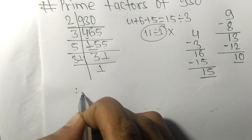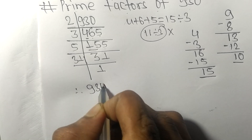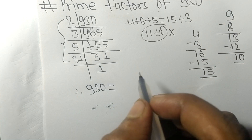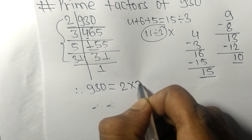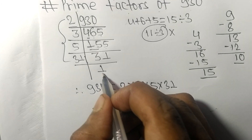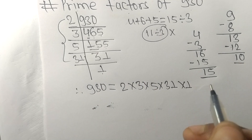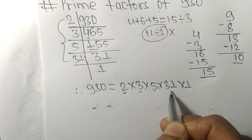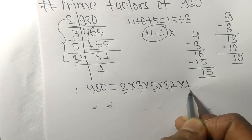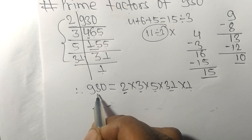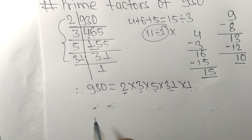On dividing 31 by 31 we get 1. Therefore, 930 equals 2 times 3 times 5 times 31. So 2, 3, 5, and 31 are the prime factors of 930. That's all for today — thanks for watching.